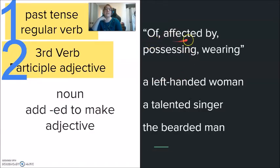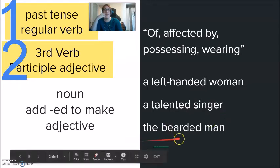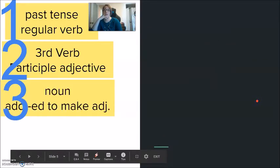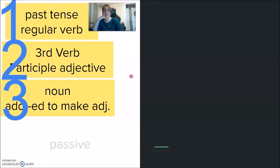Usually this means that something is affected by, possessing, wearing. For example, a left-handed woman. The word hand, noun. Adding the -ED. Which hand? A left-handed woman. A talented singer. The word talent, noun. She has talent. This is a thing, a noun. A talented singer. The bearded man. Again, beard, noun. This is a thing. Worn by someone. The bearded man.